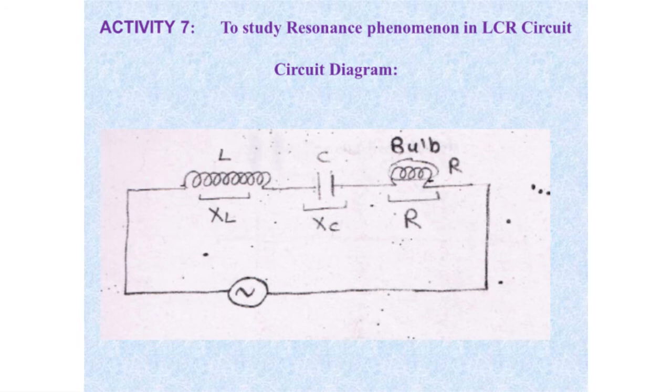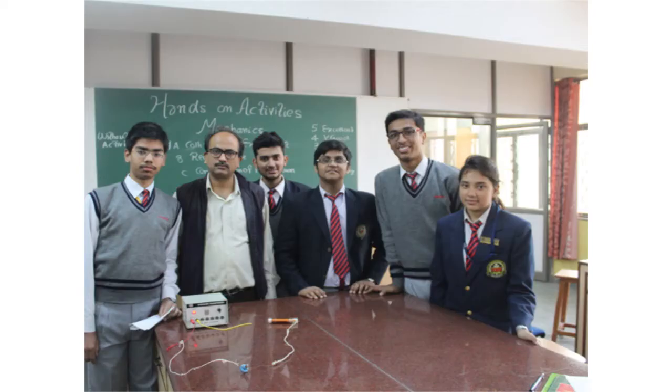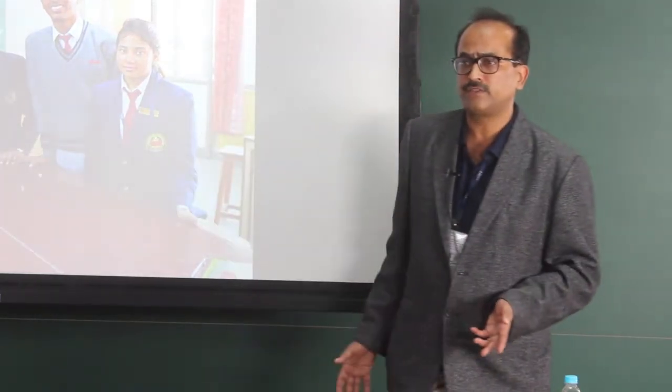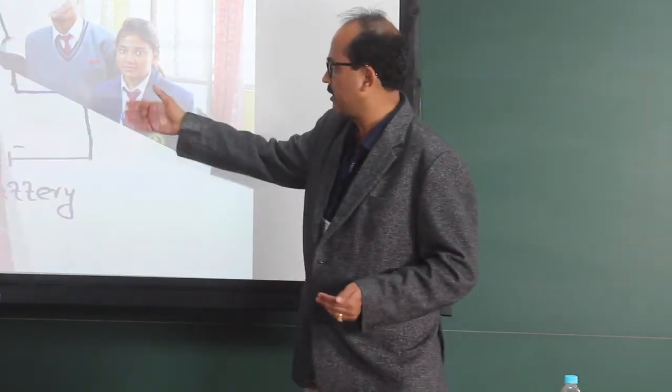These are some experiments on electricity. This is a class 12th experiment on LCR. You take an inductor, capacitor and a resistance. As you can see here, you can change the values of L and C and you can note down the brightness of the bulb. With the change in the value of L and C, XC and XL will change, this will change the brightness.